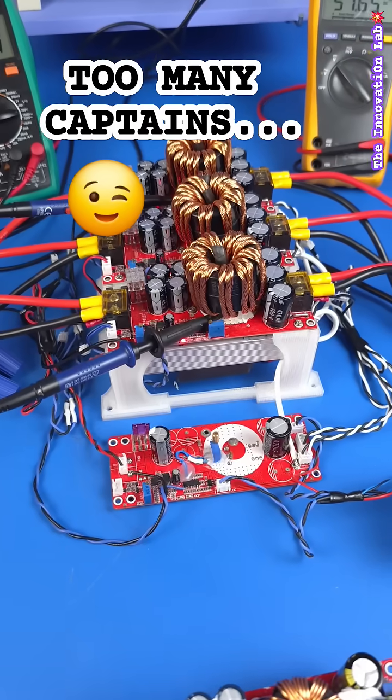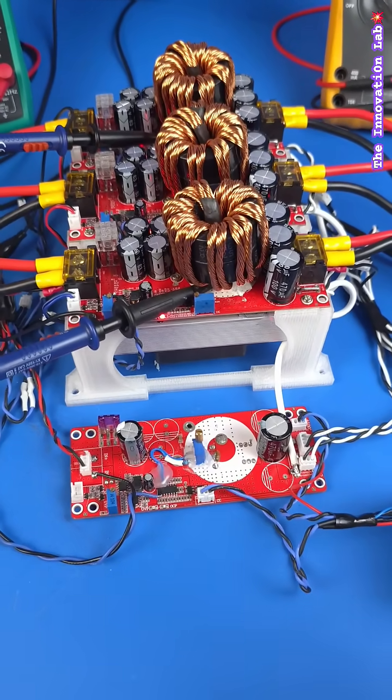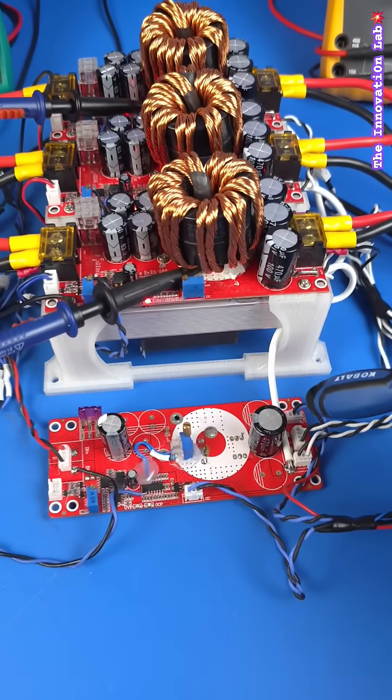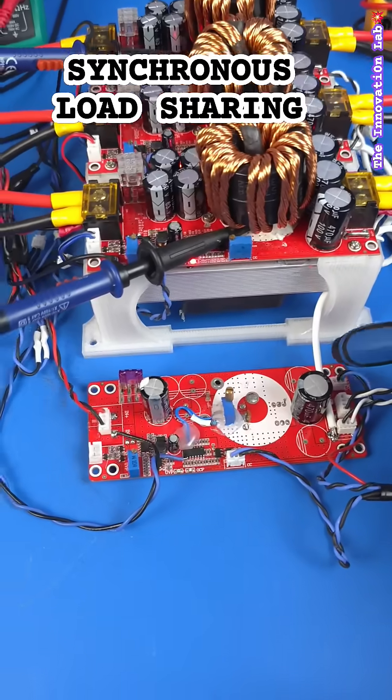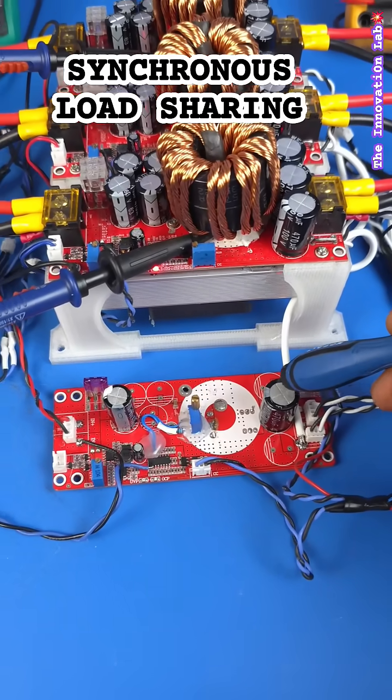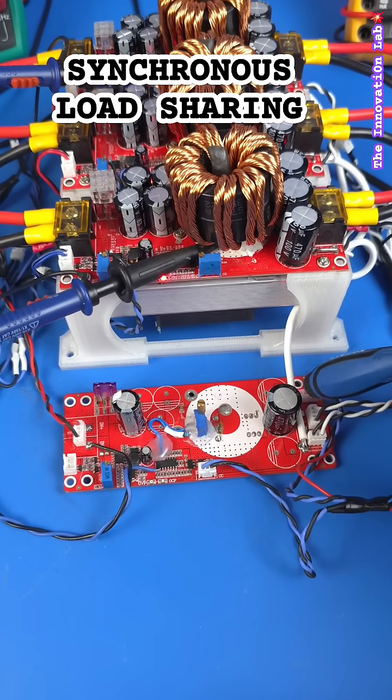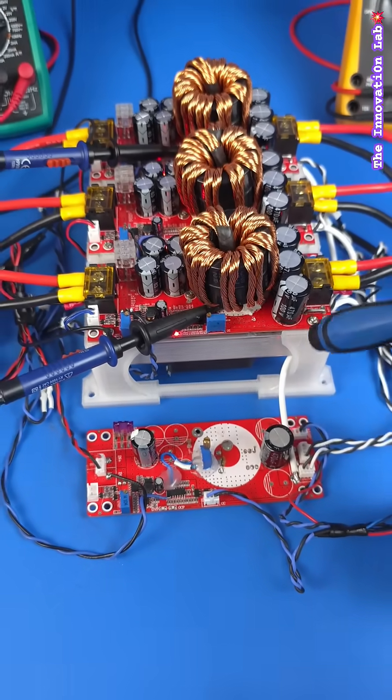So essentially the hack that we're showing you guys here, that we're going to show in the upcoming video, is that we figured out that we could just use one dedicated control board to set the PWM to control these three DC to DC converters.